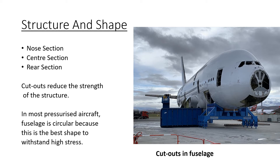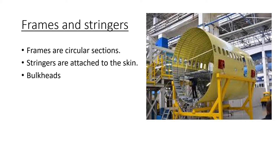Most aircraft fuselages are circular in shape. If the fuselage were square, the corners would have stress concentrated, which could cause the aircraft to burst. The fuselage also has cutouts for windows and doors, which can reduce structural strength — that is why most windows have reinforcement around them.